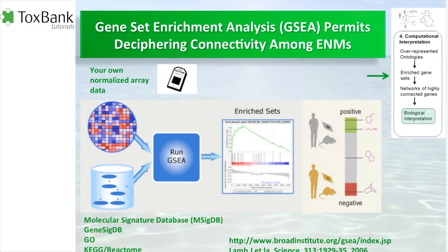Gene Set Enrichment Analysis operates by giving a gene a score if it belongs to a certain pathway, or an ontology gets a score. It begins by sorting all genes from those with the highest differential expression all the way to those with the lowest acceptable differential expression — for example, two-fold changed.